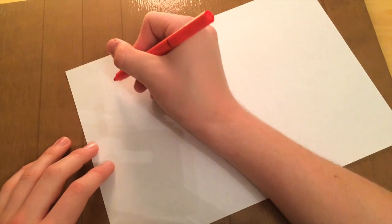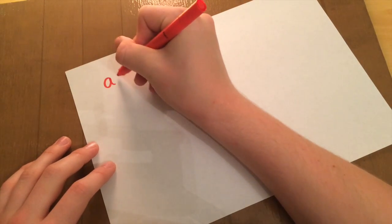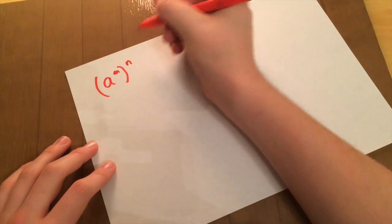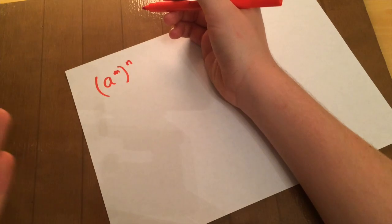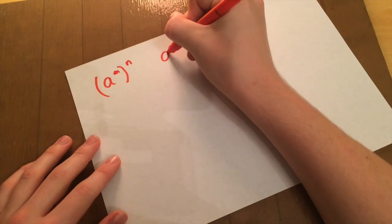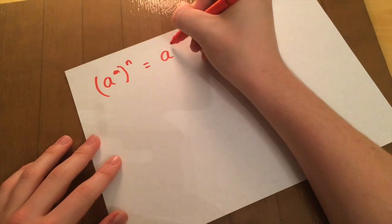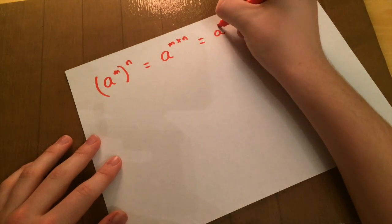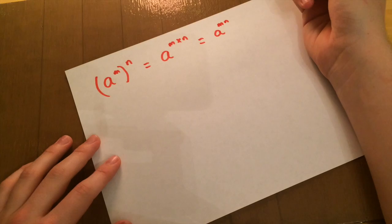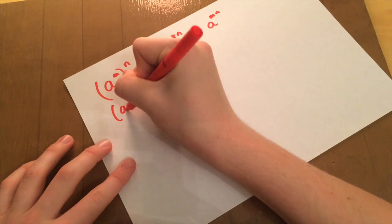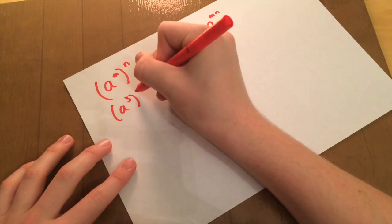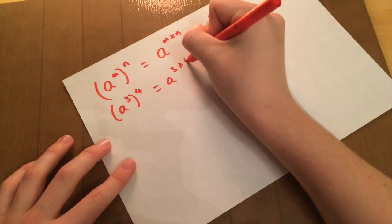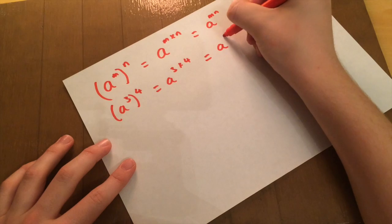Next we have brackets, so brackets are now involved. So if we have A to the M, then N on the outside of the brackets, this means that you're multiplying the power. So this equals A to the M times N, which is the same as saying AMN. So if we stick numbers in once again, this is A to the 3 times 4, so that would be A 3 times 4, and that is A to the 12.